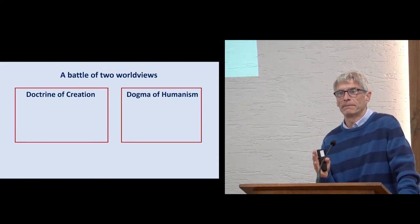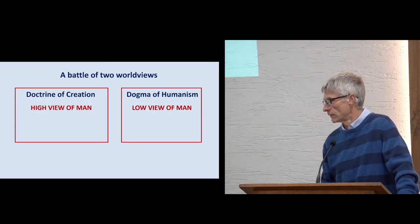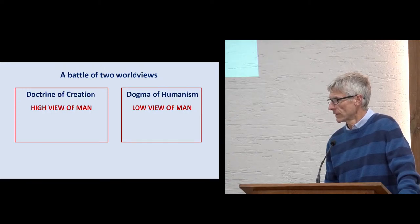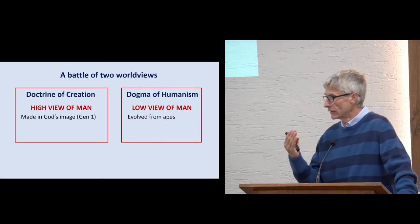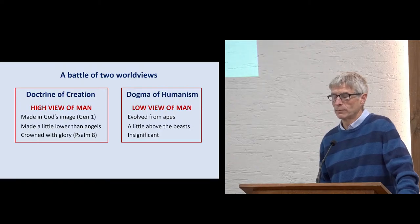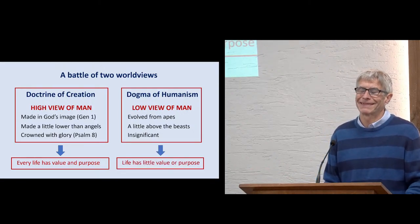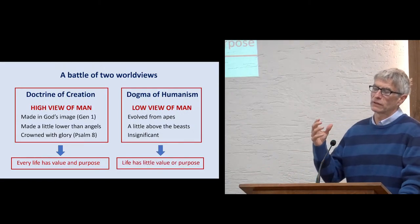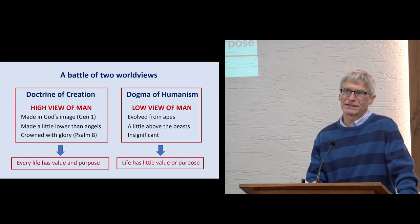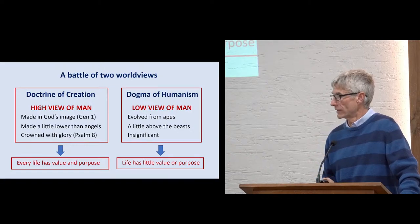You have the doctrine of creation, the high view of man. The dogma of humanism, the low view of man. The high view says we are made in God's image, little lower than the angels, crowned with glory and honor. Evolution says we're a little above the beast, insignificant. And so it's not surprising that today we have support for abortion and all the ideologies that we have. Because if you say that man is just an ape, just an animal, worthless, then this is the consequence of those ideologies.